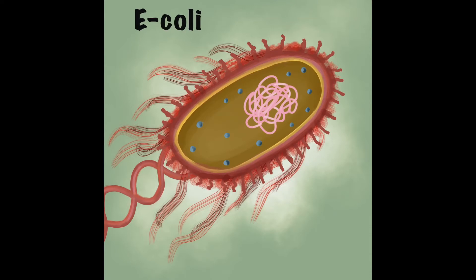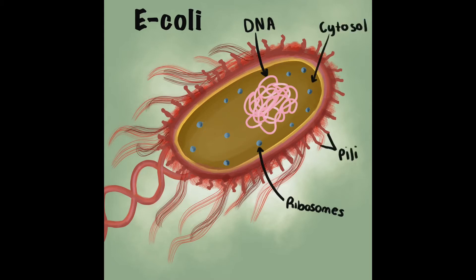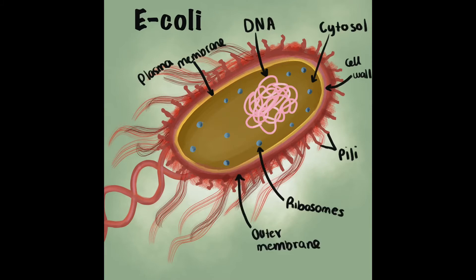Now let's talk about the components and structure of an E. coli bacteria. The genetic material of E. coli comes in the form of circular DNA. E. coli also contains ribosomes, a cytosol, pili, the plasma membrane, the cell wall, and the outer membrane structure. E. coli also contains a flagella, most specifically a peritrichous flagella. This flagella is projected in all directions. Because E. coli is gram-negative, it contains a periplasmic space between the plasma membrane and the cell wall.